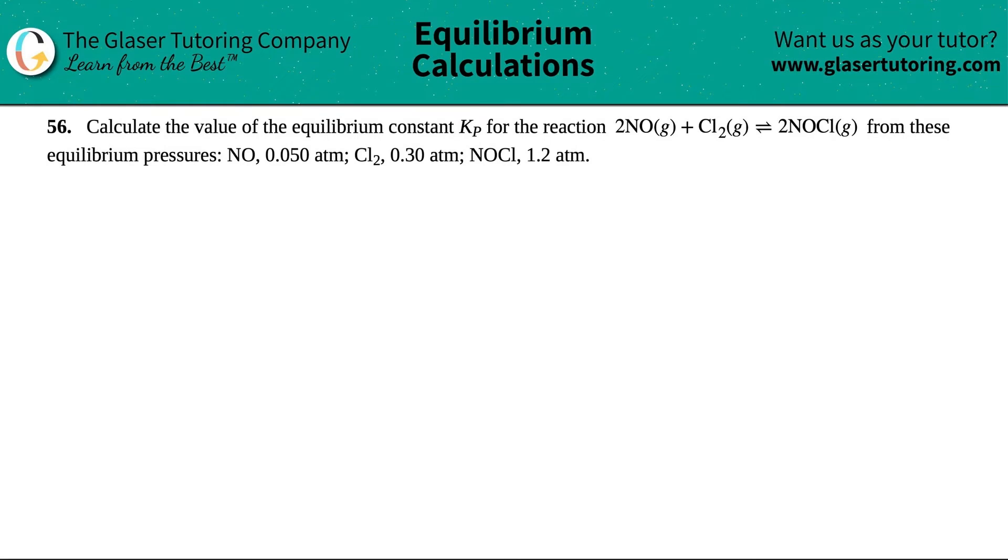Number 56. Calculate the value of the equilibrium constant Kp for the reaction 2NO gas plus Cl2 gas comes to equilibrium with 2NOCl gas from these equilibrium pressures. They tell us that NO was 0.050 atm, Cl2 was 0.3 atm, and NOCl was 1.2 atm.